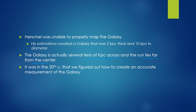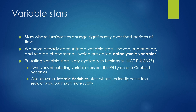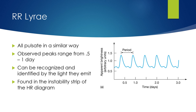It was in the 20th century that we figured out how to create an accurate measurement of the galaxy, using variable stars — stars whose luminosities change significantly over short periods of time. We have already encountered variable stars such as nova, supernova, and related phenomena, called cataclysmic variables. Pulsating variable stars vary cyclically in luminosity — not pulsars. Two types of pulsating variable are the RR Lyrae and the Cepheid variables, also known as intrinsic variable stars because their luminosity varies in a regular but more subtle way. RR Lyrae pulsate in a very similar way, with observed periods ranging from 0.5 to one day, and they are found in the instability strip of the HR diagram.